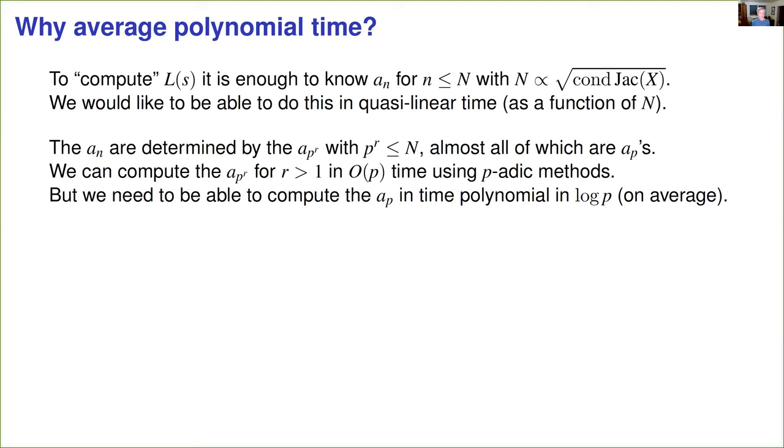Now because it's defined by an Euler product, the a_n are completely determined by the values at prime powers n. And if we're considering prime powers up to some bound, almost all of those prime powers are actually primes. So if we can compute the aps quickly, we can afford to take a little more time on the a_n's for prime powers n, and there are existing p-adic methods that can easily do this in O(p) time, or even in O(√p) time, which is more than fast enough for us to achieve a quasi-linear running time, so long as we can compute the aps in time that's proportional to log p on average.